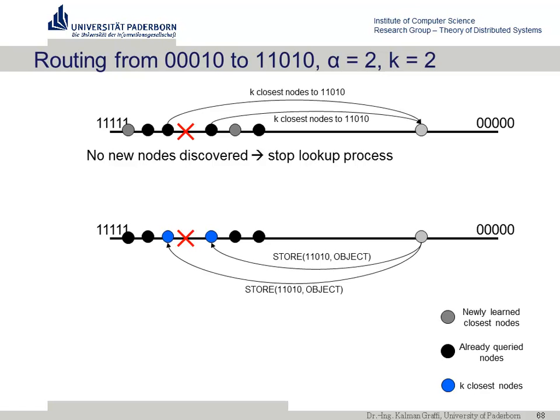Another difference from Chord and Pastry: objects are not stored on only one node but on the K closest nodes, providing built-in replication. If someone else is looking for the same content, they proceed with the same routing but may find a slightly different set of K closest nodes depending on their starting point and direction. There is still overlap, so the data stored across the K nodes is likely to be found.